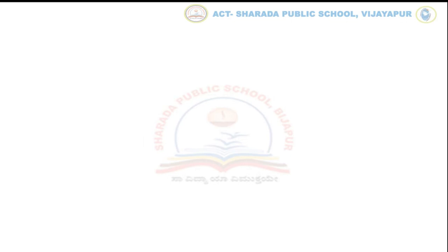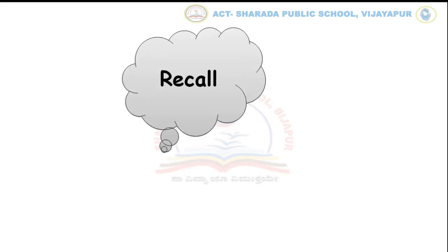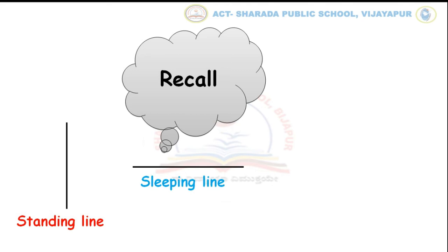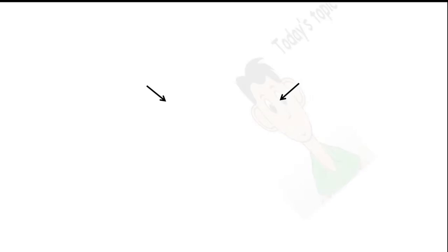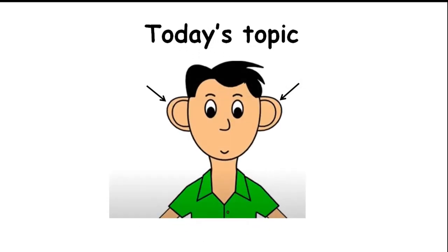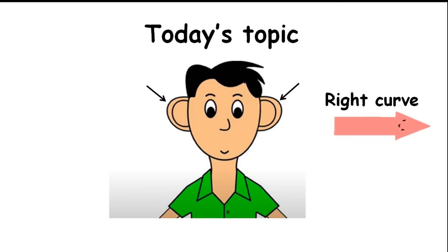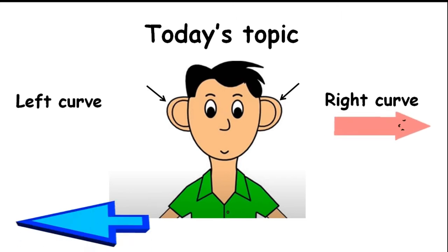Children, in the previous class, you have learnt standing line, sleeping line, and slanting stroke also. So children, today we are learning right curve and left curve.